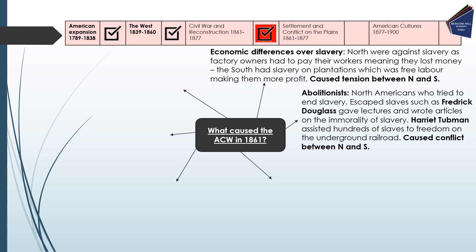We also have the role of abolitionists. In North America, people such as Frederick Douglass — an escaped slave who gave lectures and wrote articles on the immorality of slavery — along with Harriet Tubman, who assisted hundreds of slaves to freedom on the Underground Railroad. These abolitionists caused conflict and tension with the South, who believed slavery was acceptable.